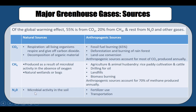The last greenhouse gas we'll discuss today is nitrous oxide. It is produced naturally from microbial activity in the soil. Anthropogenic sources include fertilizer use — since nitrogen is used as a fertilizer, nitrous oxide is released when fertilizer is applied in agriculture — as well as from transportation.